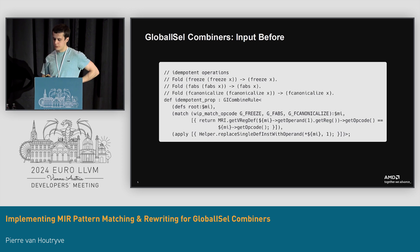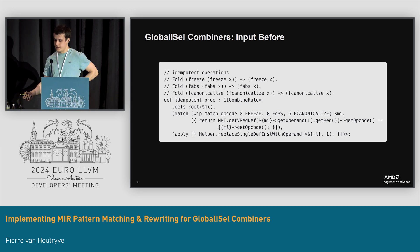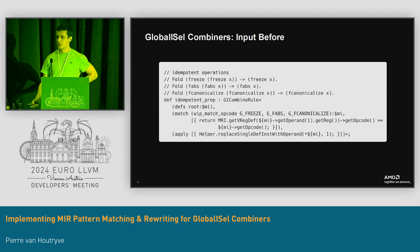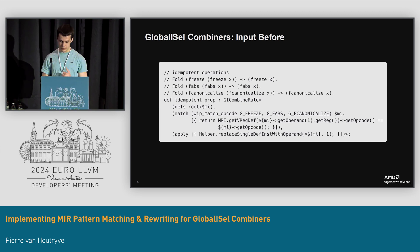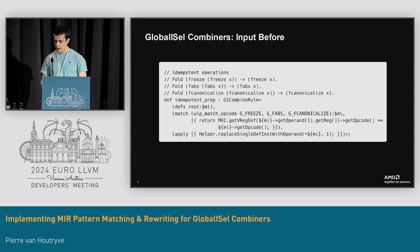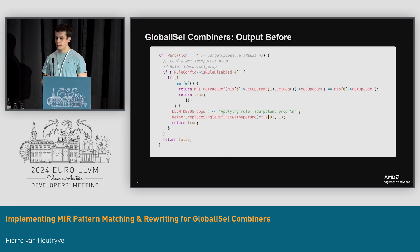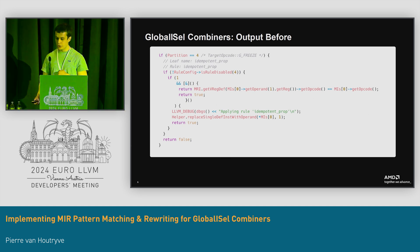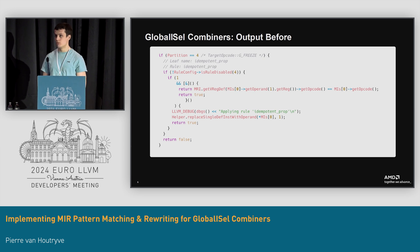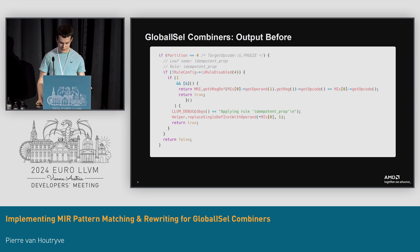Looking at another example: this one matches a few different opcodes, but again, same deal. We just put a list of opcodes we want to look at, then everything is C++ for the matching and rewriting. That's how the backend worked before. The backend emitted C++ code, which worked well but was kind of limited, because you had to make inefficient code just so it would be easier to generate.